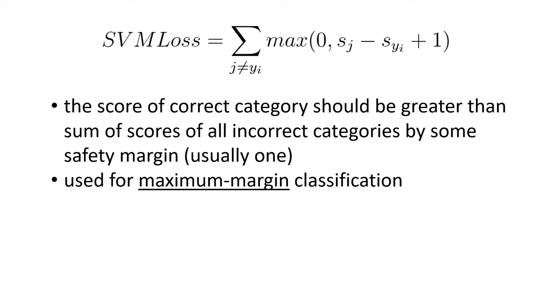So when the score of correct category is greater than the sum of all incorrect categories by some safety margin, then we can say that we have a very good classification model. Most important here is the term, the maximum margin classification.